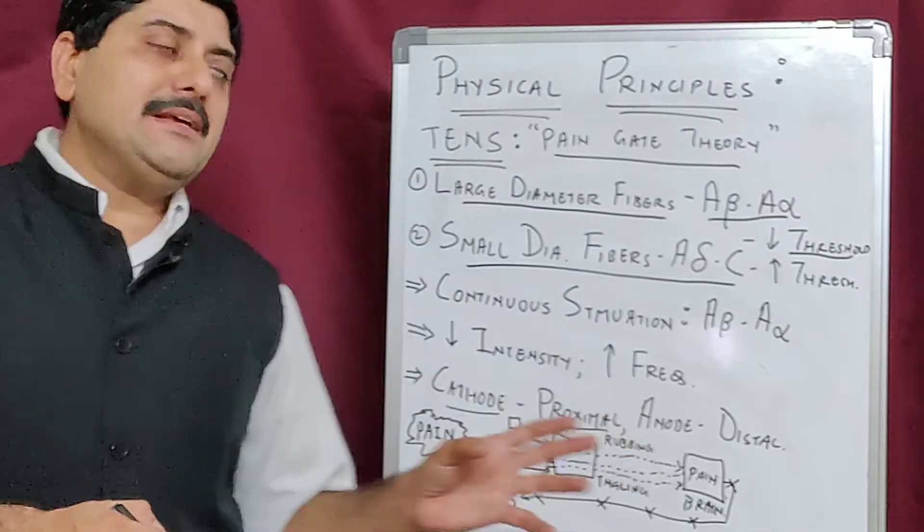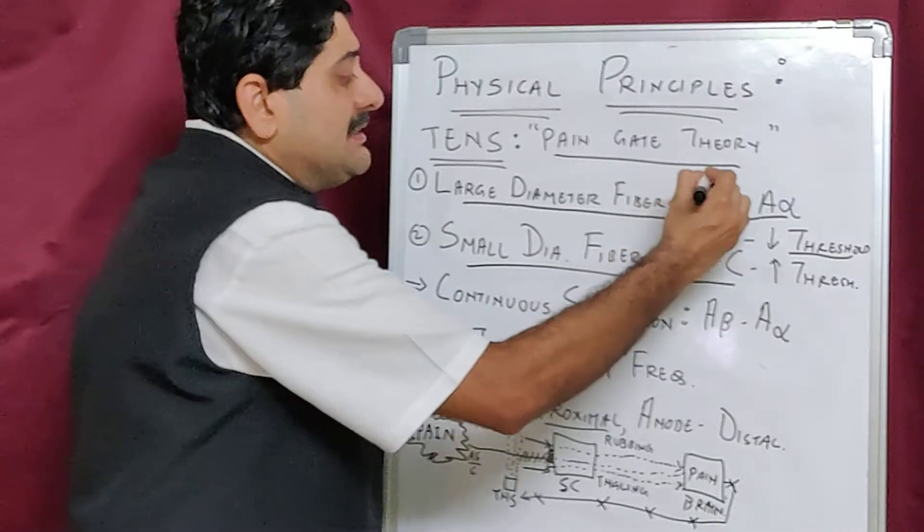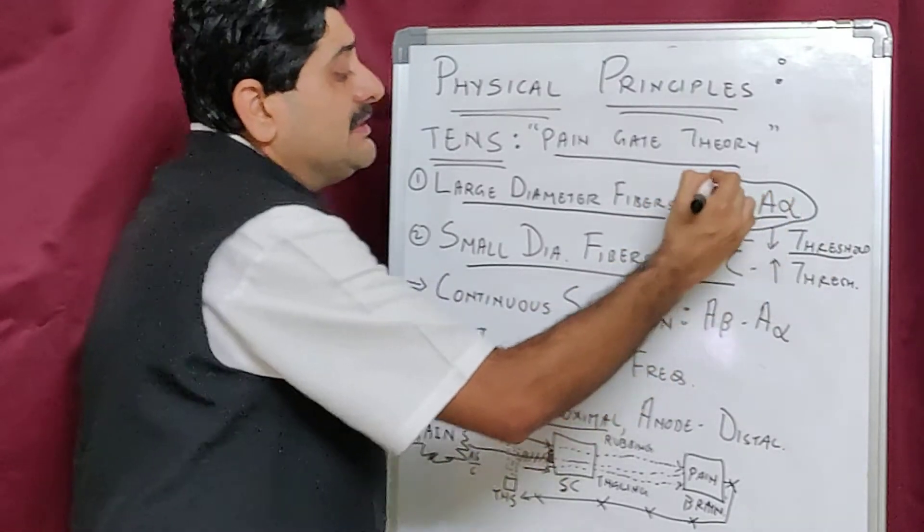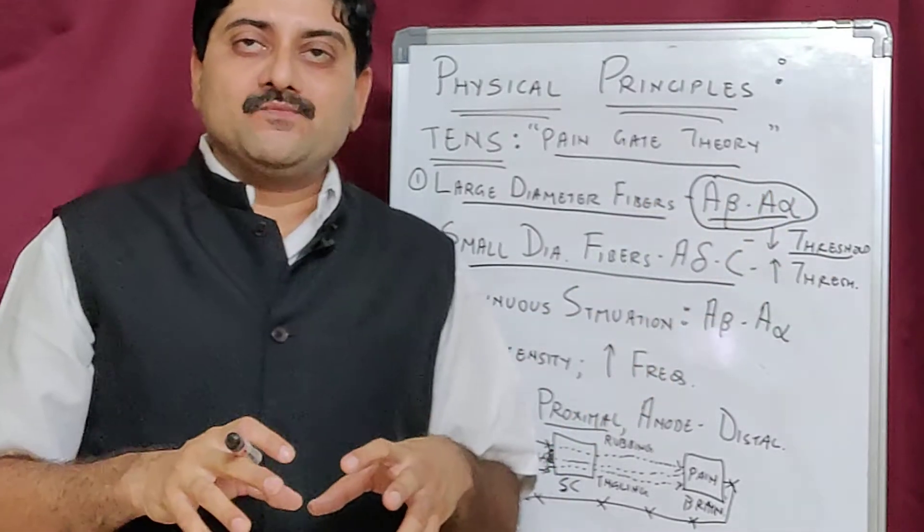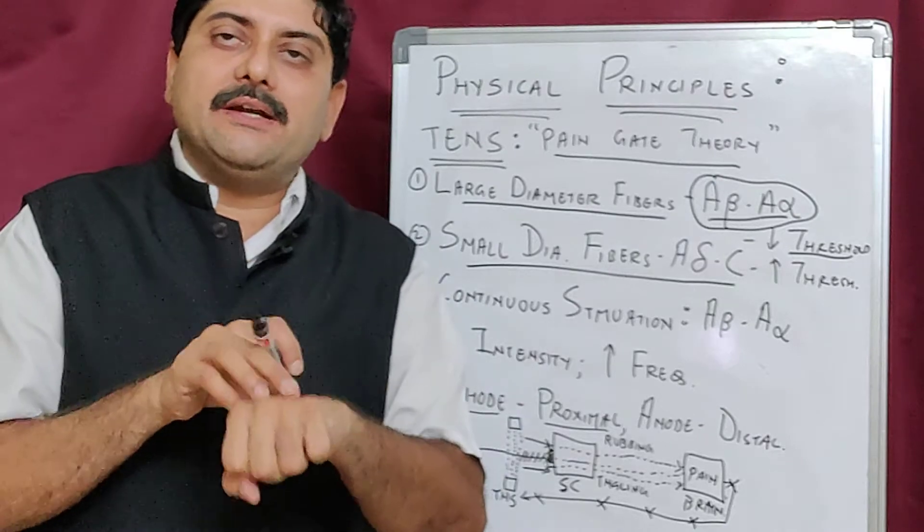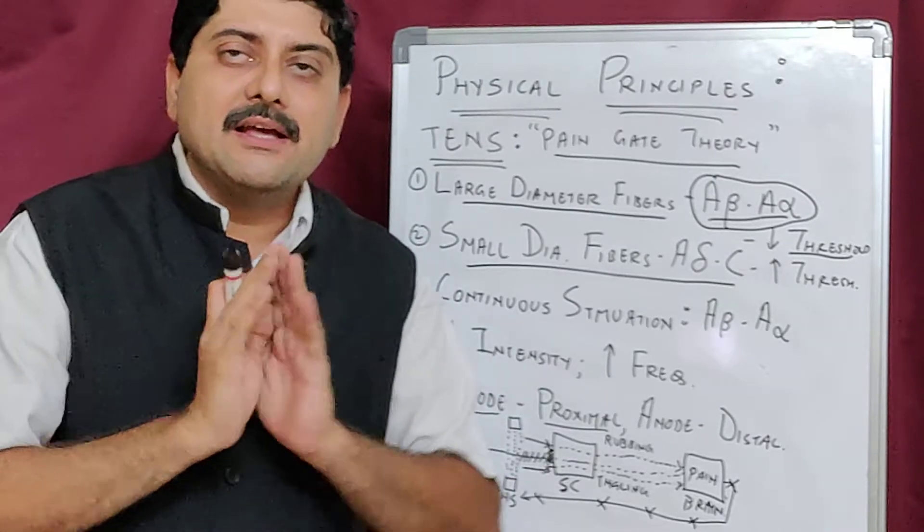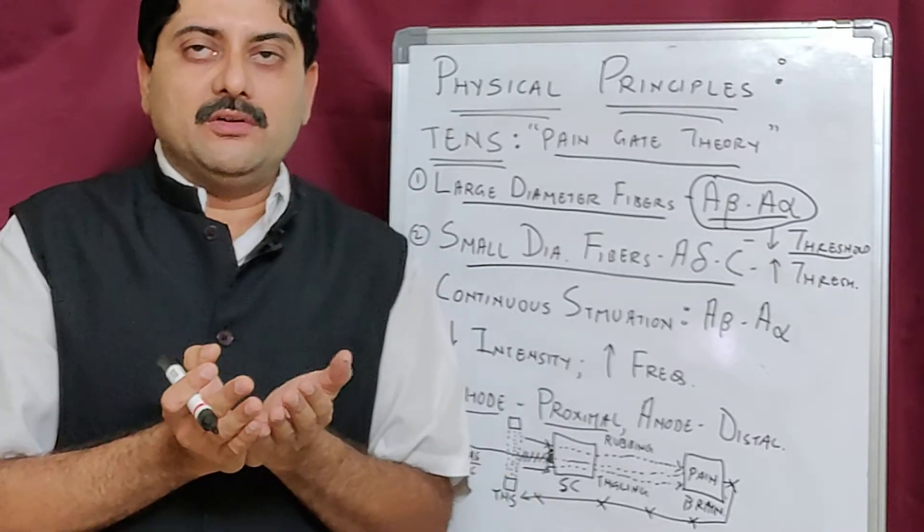The same simile is here: these are the two-wheelers in this particular signaling. When you stimulate these, they go and crowd at the spinal cord.